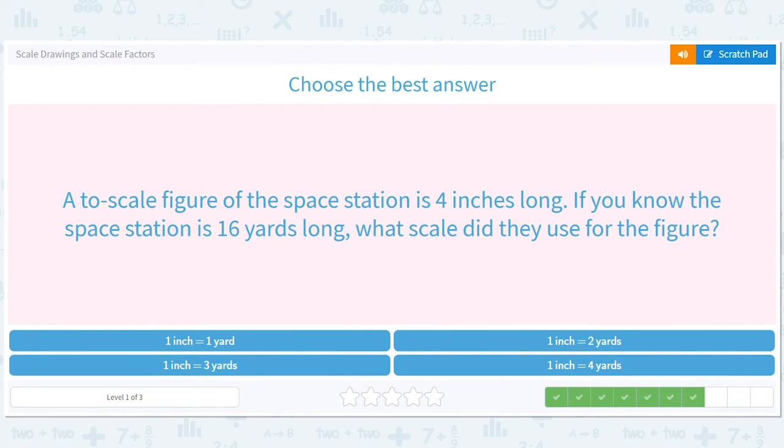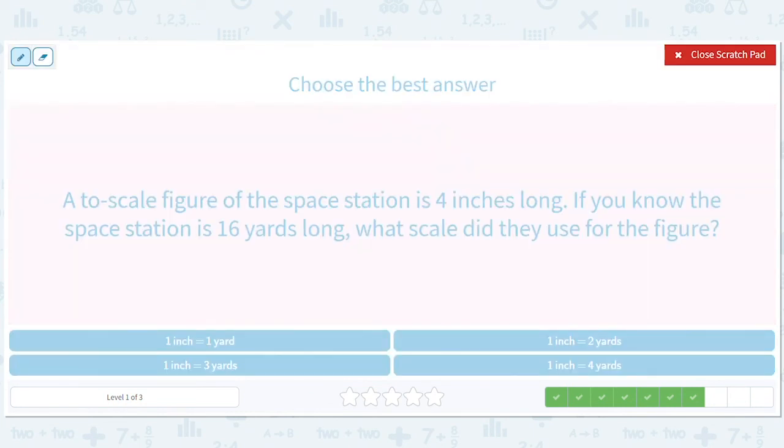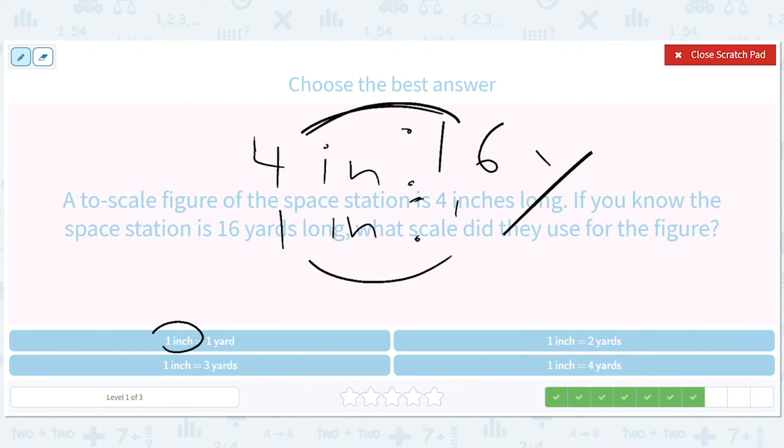A two scale figure of the space station is four inches long. If you know the space station is 16 yards long, what scale did they use? So four inches is to 16 yards. That means, again, we're looking for one inch here. One inch is to, well, 16 divided by four is four or four times four is 16. So one times four is four yards. So one inch should be four yards. So the bottom right is the answer.